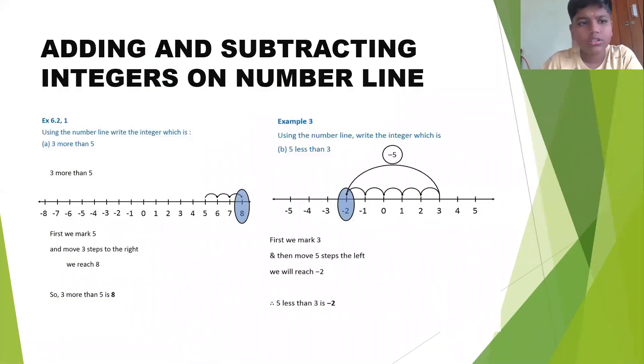Next, adding and subtracting integers on a number line. How to add and subtract integers on a number line? 3 more than 5 means 5 plus 3. Here the steps are: first we should mark 5, then we should move 3 steps to the right.